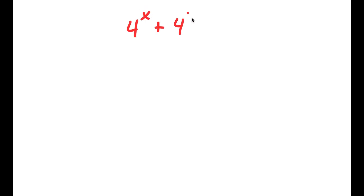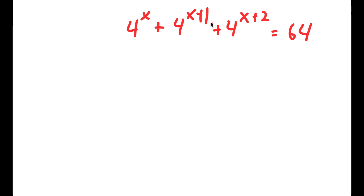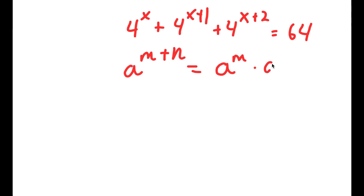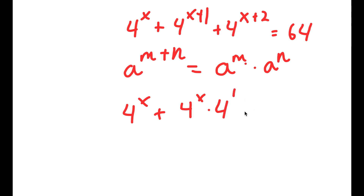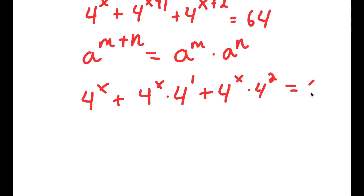In this problem, I have 4 to the power of x, plus 4 to the power of x plus 1, plus 4 to the power of x plus 2, is equal to 64. To solve this, I'm going to use the exponent property that a to the power of m plus n equals a to the power of m times a to the power of n. So 4 to the power of x plus 1 equals 4 to the power of x times 4 to the power of 1, and 4 to the power of x plus 2 equals 4 to the power of x times 4 to the power of 2. This equals 64.